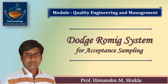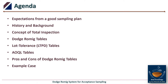Hello and welcome to today's lecture on the Dodge-Romig System for Acceptance Sampling under the module of Quality Engineering and Management. The agenda for today's lecture covers: expectations from a good sampling plan, history and background of the Dodge-Romig System, the concept of total inspection, Dodge-Romig tables (LTPD and AOQL tables), pros and cons of Dodge-Romig tables, and finally one example case.